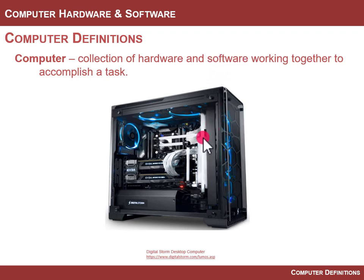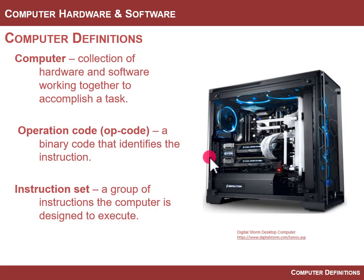Hardware by itself doesn't do anything. Software by itself doesn't exist. It's only when you take this sequence of operation codes and put it into the hardware and tell it to do these operations in this order that the computer actually starts doing something. An operation code is a binary code — ones and zeros — that defines what operation the computer hardware is going to execute at that time. We also call this an instruction.